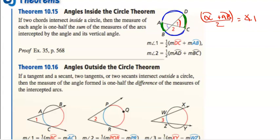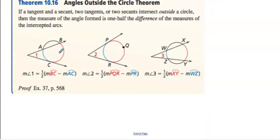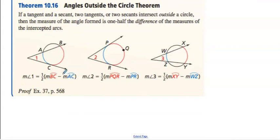For angles on the outside, you're subtracting instead of adding. Angle one equals the larger arc minus the smaller arc, divided by two. The first example has one tangent line and one secant, the next has two tangents, and the last has two secants — but the formula stays the same for all of them.